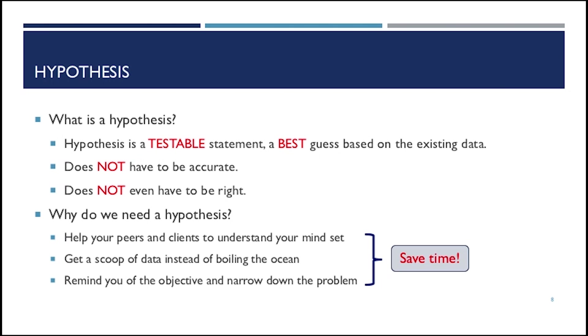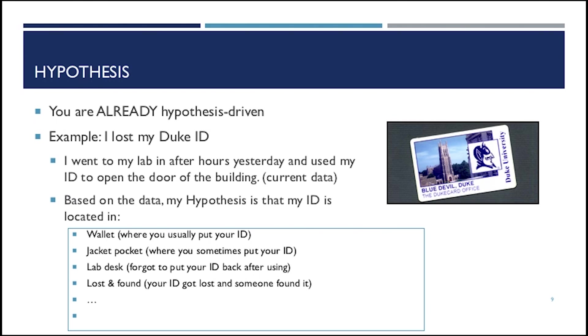But luckily, you are already hypothesis-driven. A good example here is I lost my Duke ID. The data here is I went to my lab after hours yesterday and used my ID to open the door in the building. So this is the current piece of data we have. Based on the data, my hypothesis is that my ID is located in my wallet. This is my best guess because that's where I usually put my ID in. And then you open a pocket and you check it. No, it's not there.